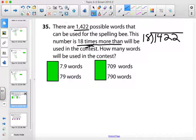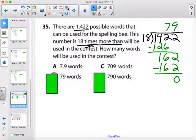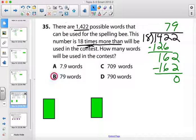18 can't go into 1. It can't go into 14, but it can go into 142. So, 142 divided by 18 is 7. 7 times 18 is 126. Subtract, and you get 16. Bring down your 2, and you have 162 divided by 18 to be 9. 9 times 18 is exactly 162, which gives you 0 as an answer. So, your answer is 79.